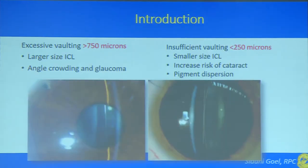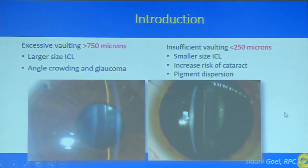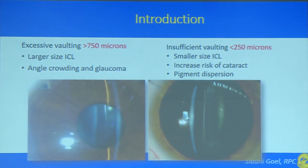So why is vaulting important? Excessive vaulting — greater than 750 microns, which could result from a larger sized ICL — can lead to angle crowding and glaucoma, as seen in the presented image. Insufficient vaulting — less than 250 microns, resulting from a smaller sized ICL — can lead to an increased risk of cataractogenesis and pigment dispersion.